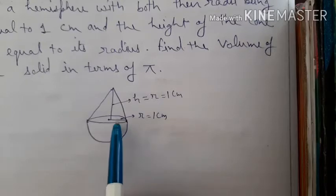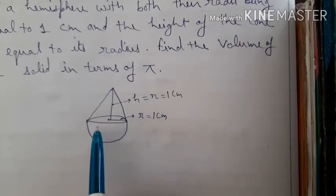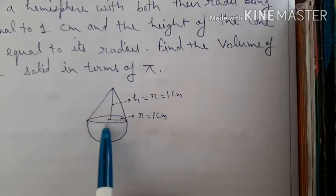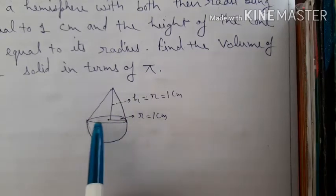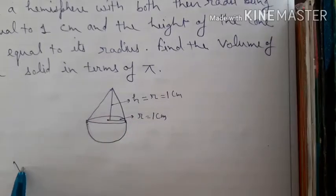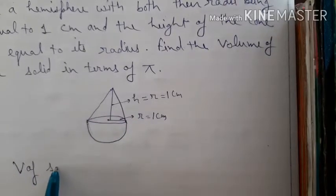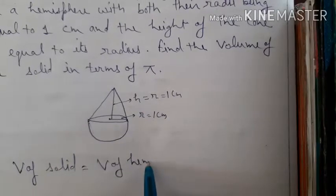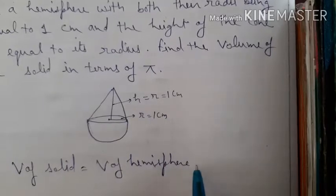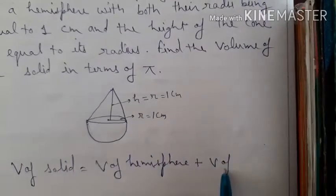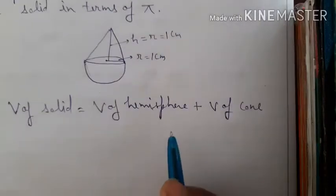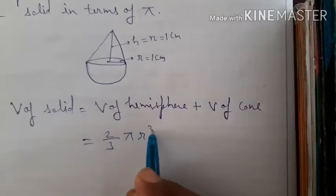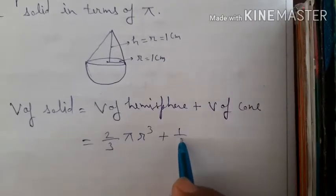We have to add both the volumes — volume of hemisphere and volume of cone. Volume of solid equals volume of hemisphere, which is (2/3)πr³, plus volume of cone, which is (1/3)πr²h.